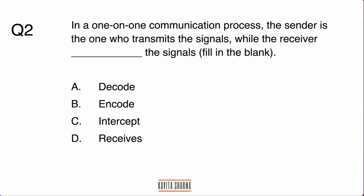Next question: in a one-on-one communication process, the sender is the one who transmits the signal while the receiver does what to the signal? Is it decode, encode, intercept, or receive?